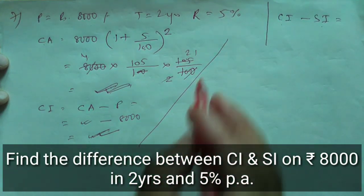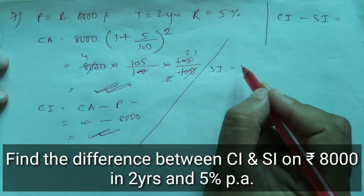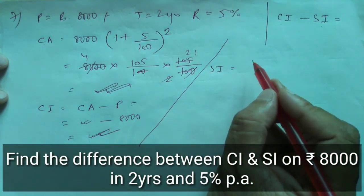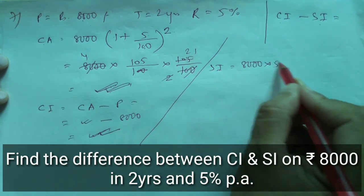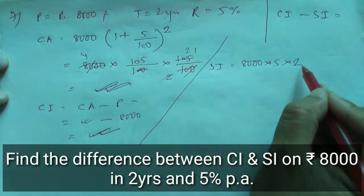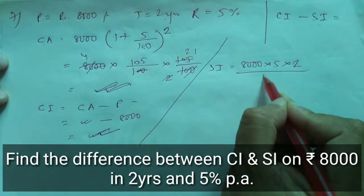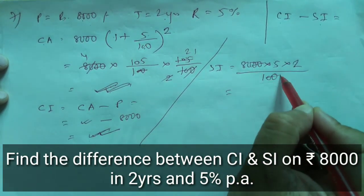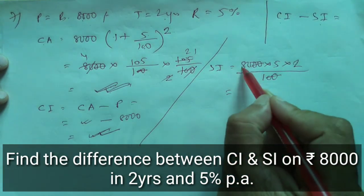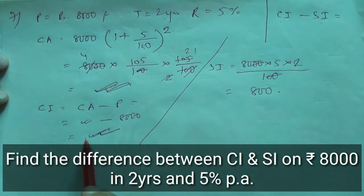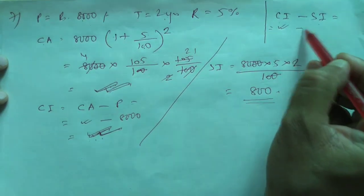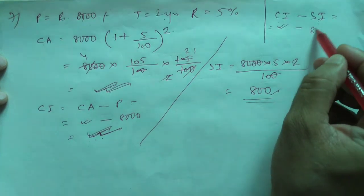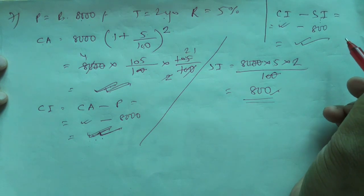Now we find simple interest. The formula is PRT by 100. P is 8,000, R is 5, T is 2. So simple interest equals 8,000 into 5 into 2 by 100, giving 800. Now find the difference: compound interest minus 800 equals the required answer. That is how you find the difference between CI and SI.